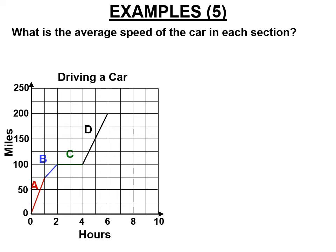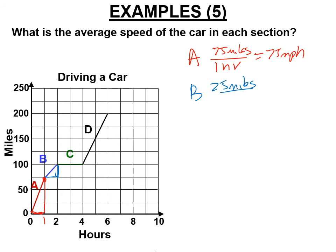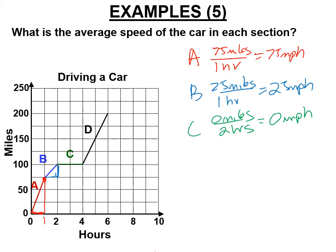On the next graph: section A, we went 75 miles in one hour — 75 miles per hour. Section B, we went 25 miles in one hour — 25 miles per hour. Section C, we went zero miles in two hours — zero miles per hour. Section D: four boxes times 25 is 100 miles in two hours — 50 miles per hour.